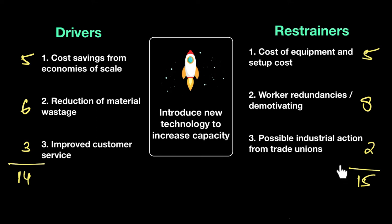The business cannot go ahead with this strategy. How do you balance this out? There are only two ways to fix this problem: either reduce the restrainers or improve the drivers. Either way, you need to tilt the balance of this strategy — only then would you be able to go ahead with it.